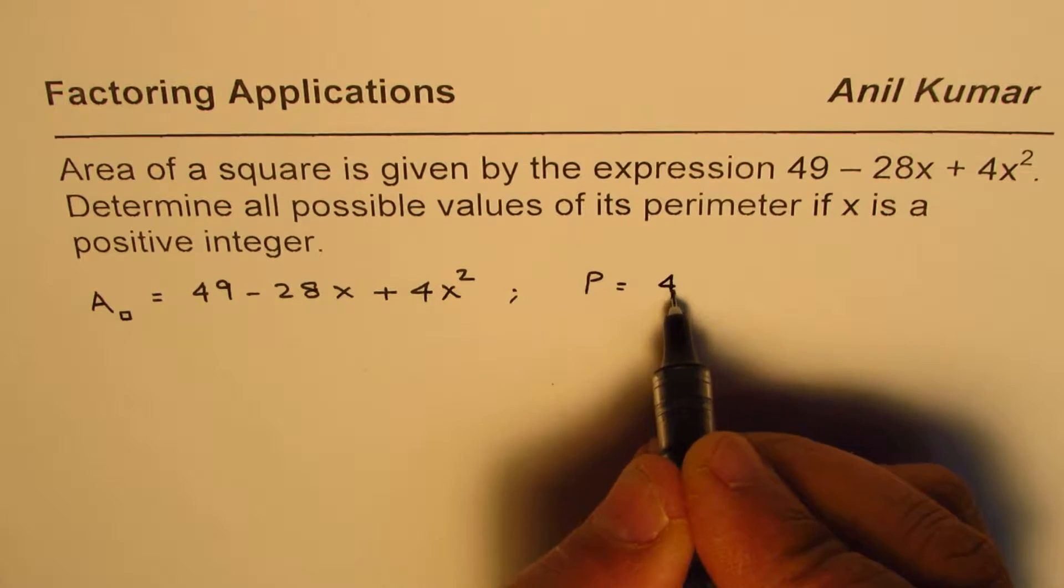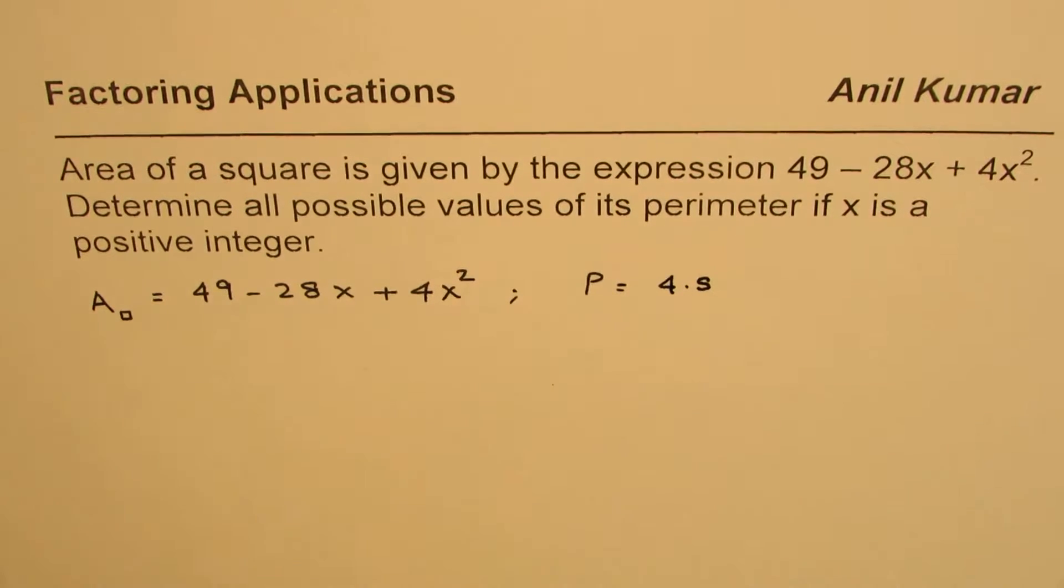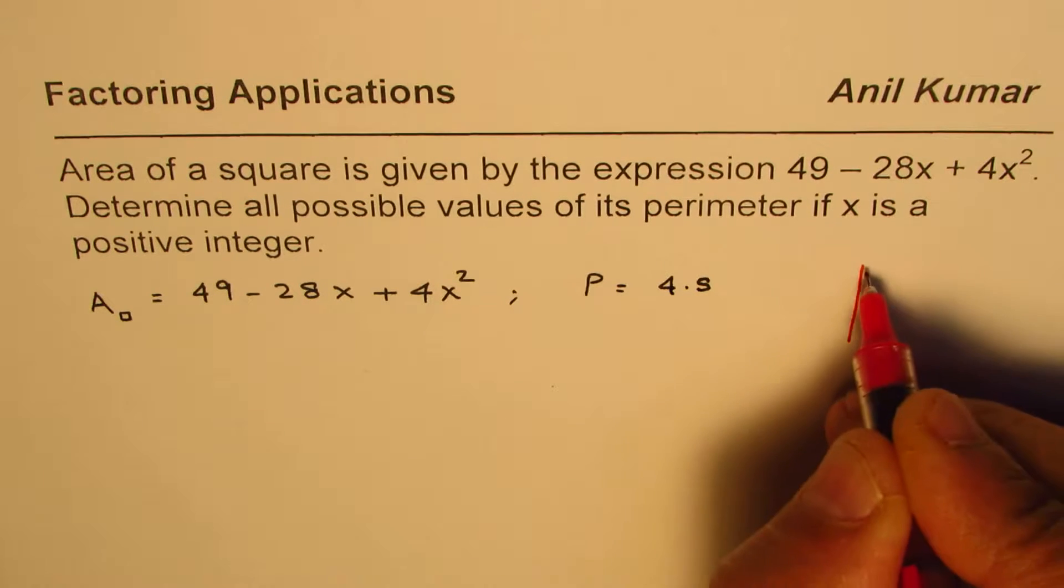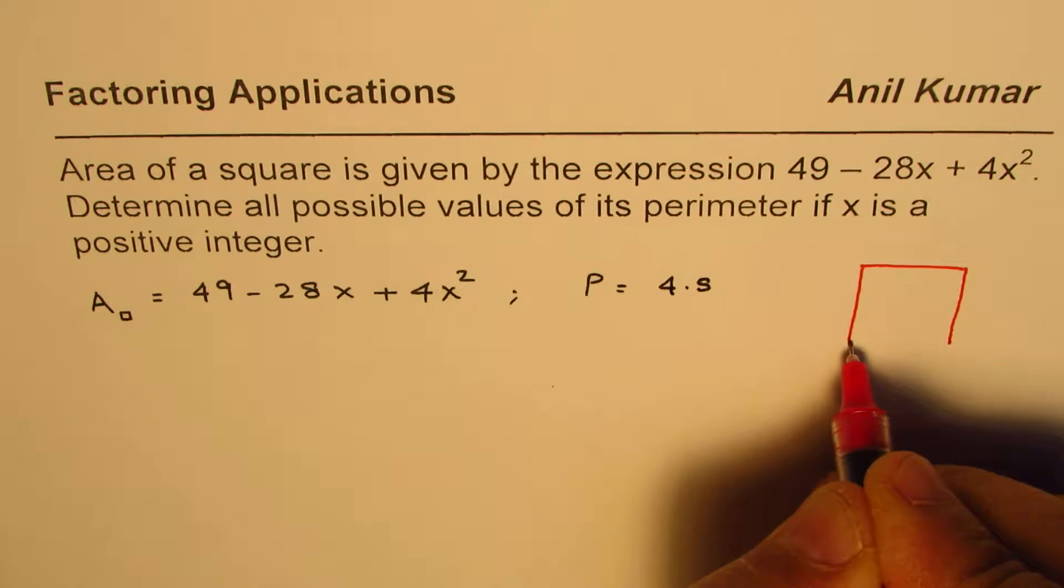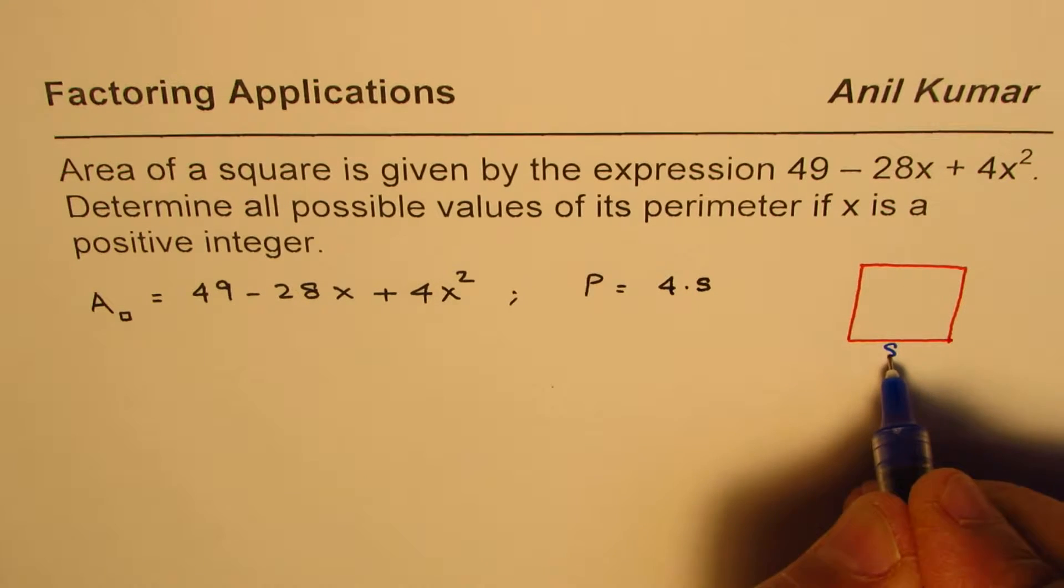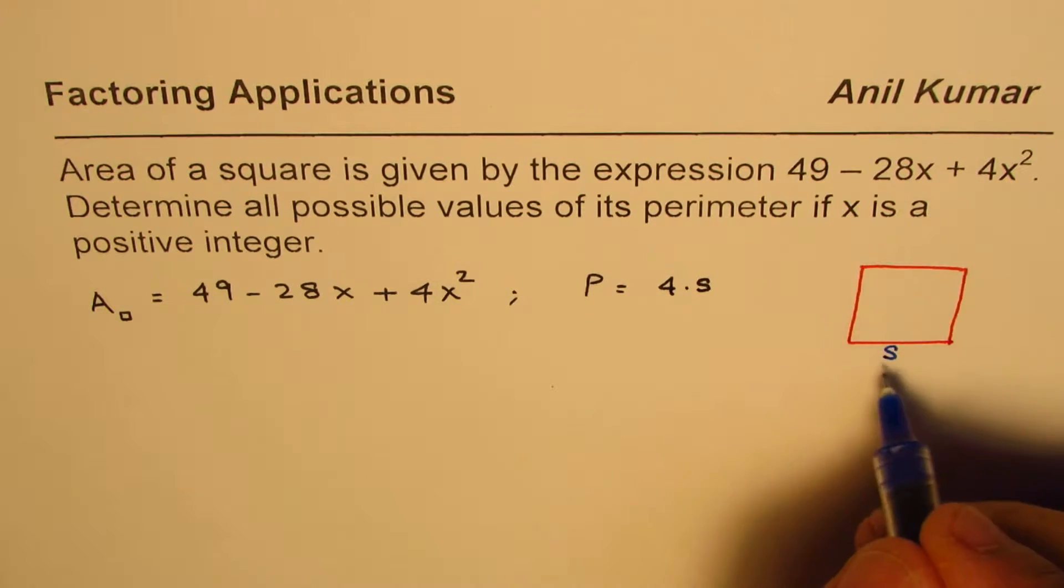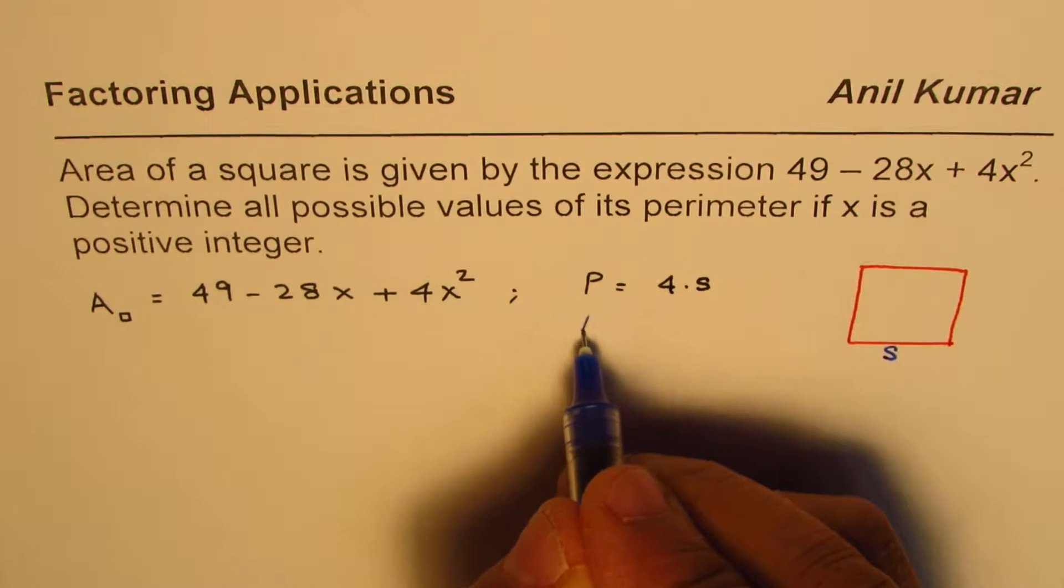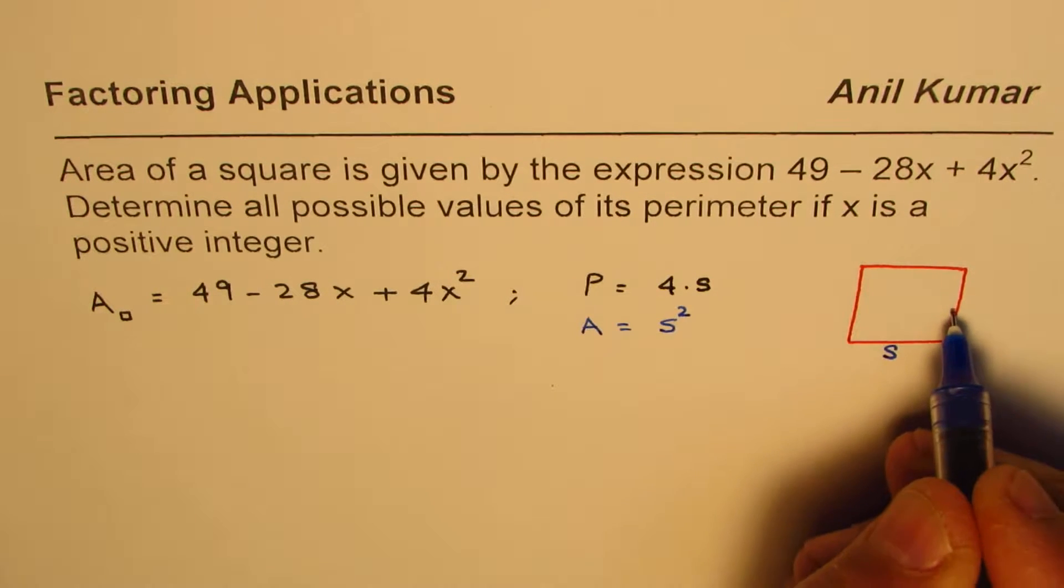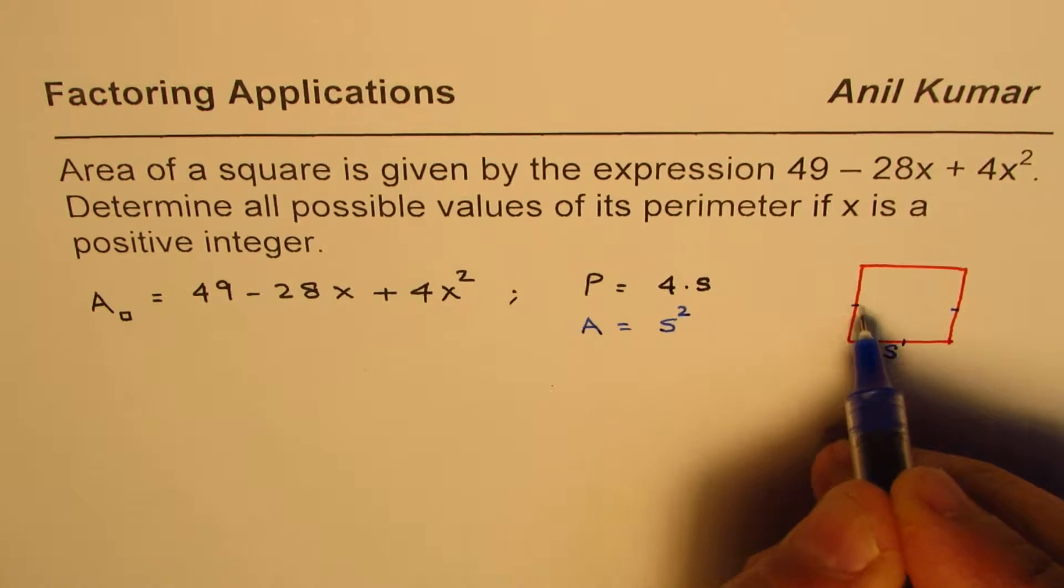What is the perimeter of a square? Perimeter of the square is 4 times the side length. Since all four sides of a square are of equal length, perimeter is 4 times the side length. So let's consider a square here. If s is the side length, then the perimeter is 4s. What is area? Area is s squared, since all the sides of the square are equal.